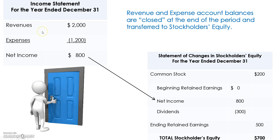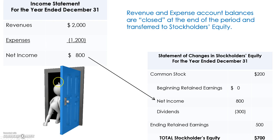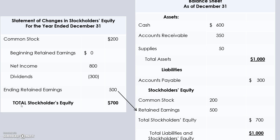Up here in the upper right-hand section is a reminder that the $800 in net income actually comes from the calculation on the income statement. The statement of changes in stockholders' equity is one of our financial statements, just like the balance sheet and the income statement, and it then becomes part of our balance sheet. You can see our assets, liabilities, and stockholders' equity — with assets equaling $1,000, liabilities plus stockholders' equity must also equal $1,000.